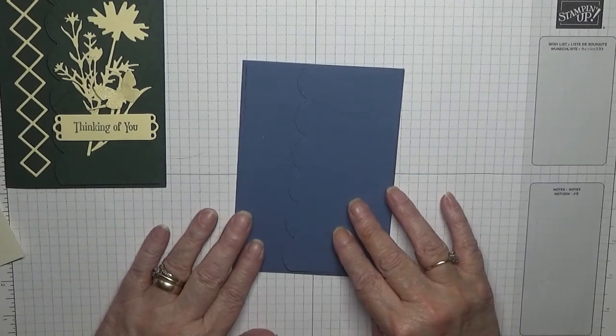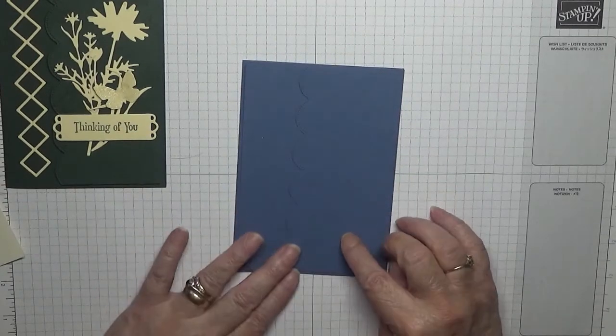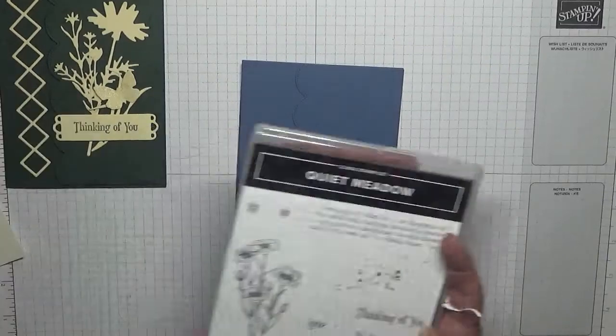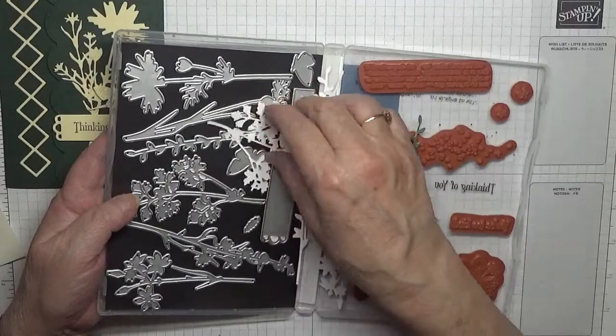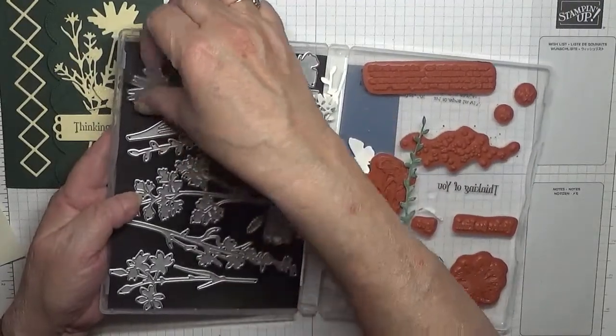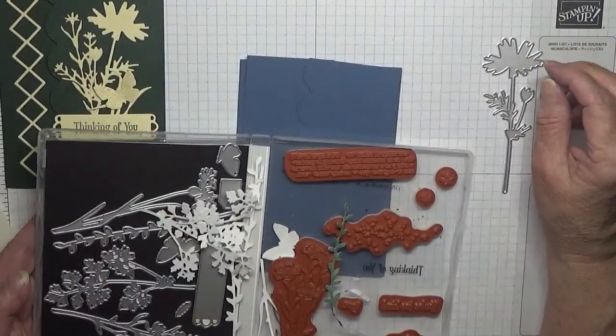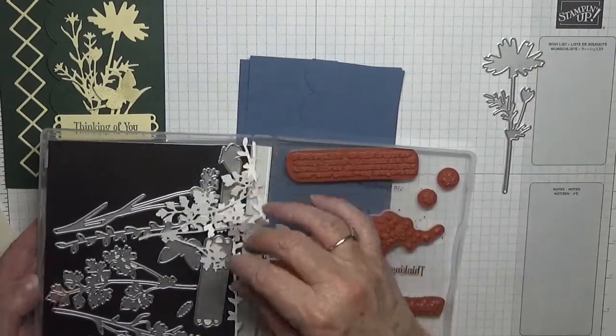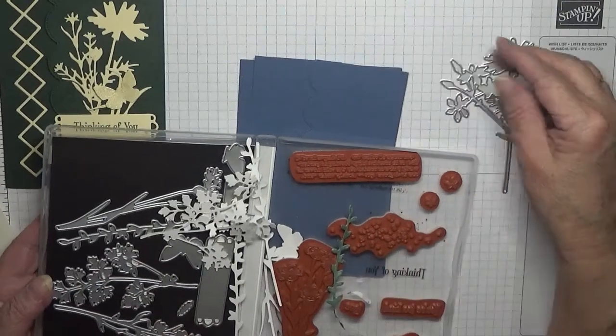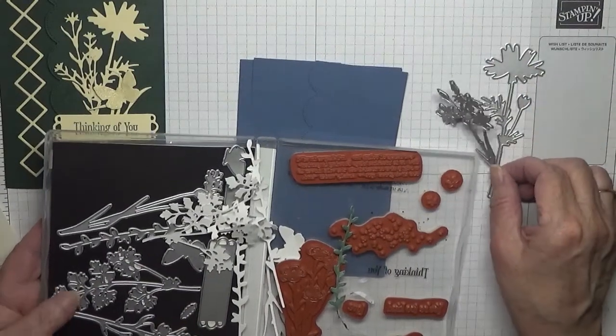There is scalloped contours, and I used the scalloped die. So that's there, and then for the flowers and whatnot we will use the dies from Quiet Meadow, and we will use this one and this one.